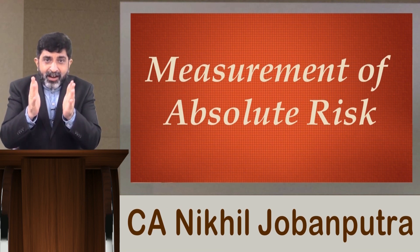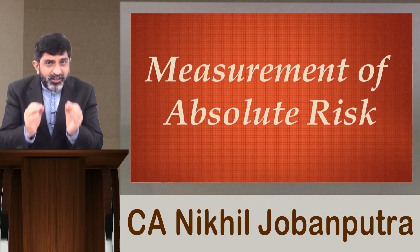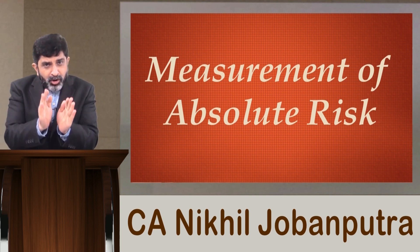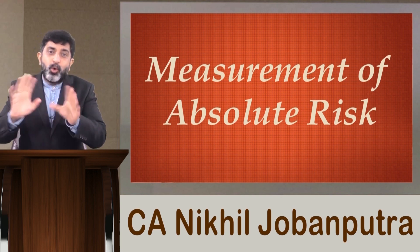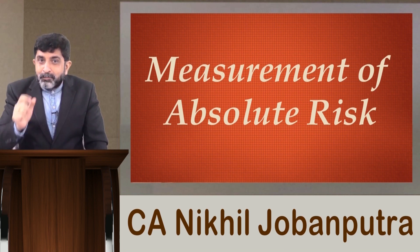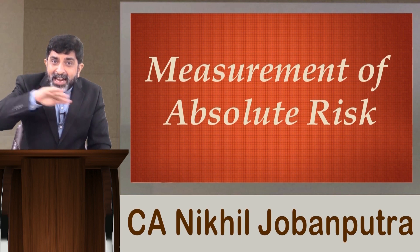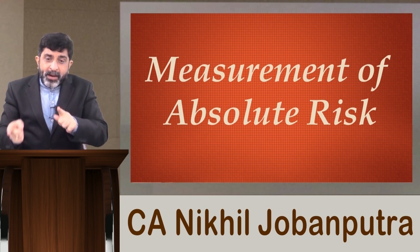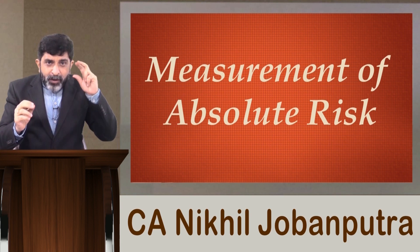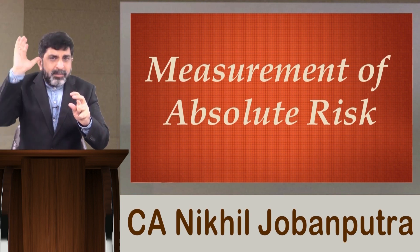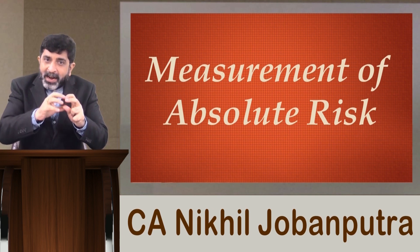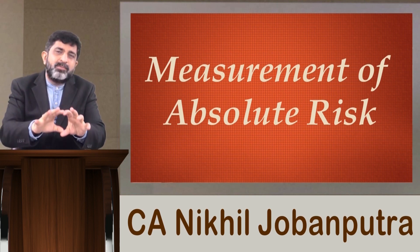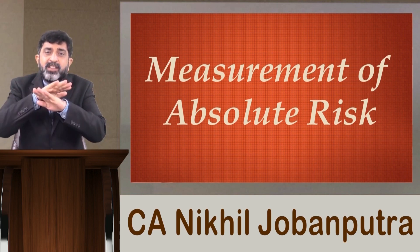The correct answer is: batsman A, most risky batsman; batsman B, moderate risk; batsman C, no risk. Do you know why no risk? Because the uncertainty element gets eliminated when it is batsman C. But uncertainty plays a high degree of role when it comes to batsman A. As a result, when you select batsman A, you are taking maximum risk. But this batsman has an advantage — it can give you a good score also. Batsman C is extremely consistent.